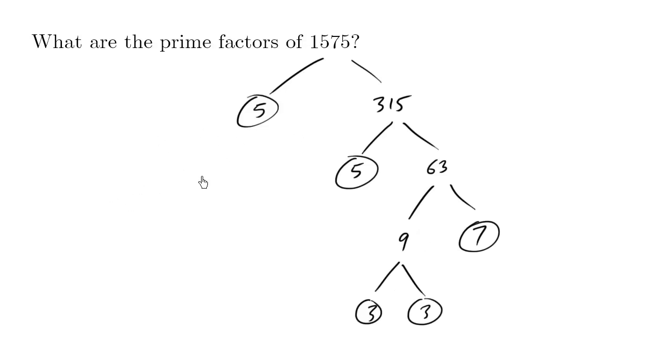If you want to find the prime factorization, you can look at all these children nodes and write them from smallest to biggest. So 1575 equals 3 times 3 times 5 times 5 times 7.